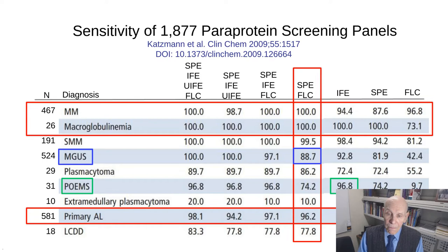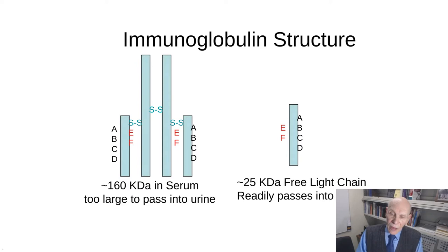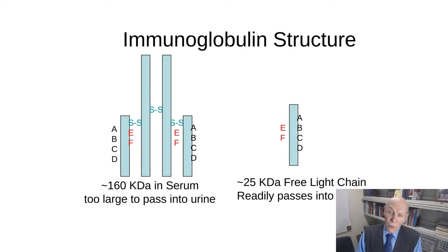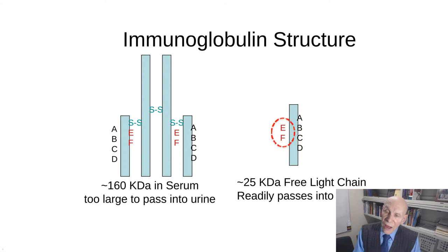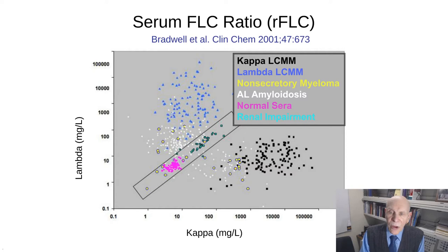Immunoglobulin structure is important here. An intact immunoglobulin molecule has antigenic determinants A through F; epitopes E and F are hidden in the interior. On the free light chain, E and F are now available — these are the epitopes that Bradwell and colleagues used to develop the serum free light chain test. Bradwell's initial report tested a large number of individuals with his created antibodies, showing kappa free light chains on the x-axis and lambda free light chains on the y-axis, with normal serum in violet, kappa myeloma as black dots in the lower right, and lambda myeloma as blue triangles in the upper left.